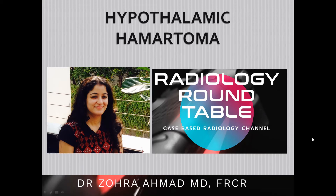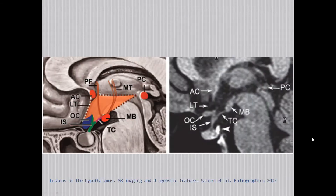We'll quickly review the anatomy of the hypothalamus. The hypothalamus is a collection of nuclei around the third ventricle and it's a triangular region which is limited anteriorly by the lamina terminalis, superiorly by a line joining the anterior and posterior commissures, posteriorly by a line joining the posterior commissure and mammillary body, and inferiorly by the tuber cinereum and the optic chiasm. The median eminence is a bulge of the tuber cinereum into the stalk.